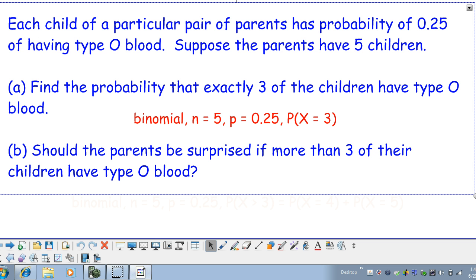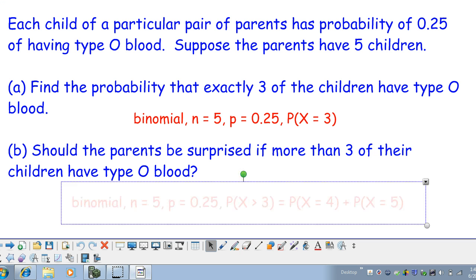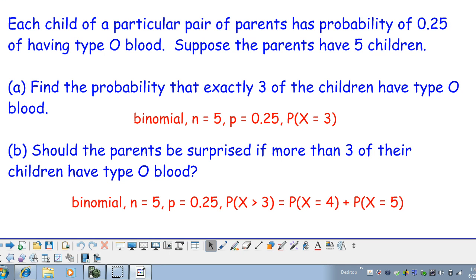So let's take a look at part B here. Should the parents be surprised if more than three of their children have type O blood? So this is still a binomial situation with five trials and the probability of success is still 0.25. But now we're looking for the probability that more than three of their children have type O blood. So either four or five of their children have type O blood.